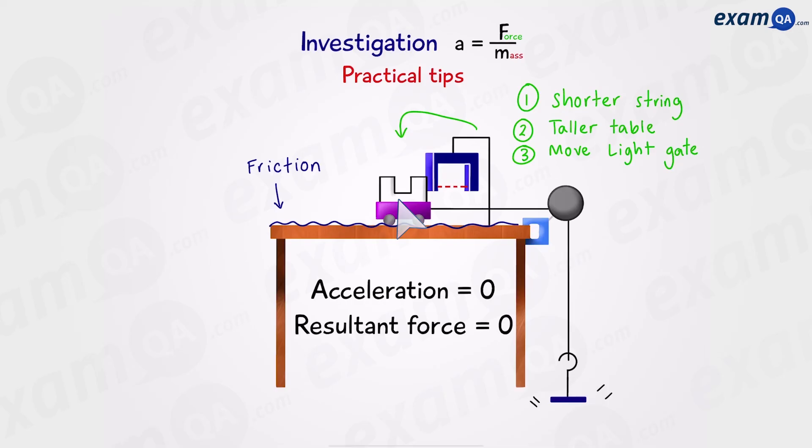Finally, any surface is going to have some sort of friction, and this can affect our results. To avoid friction, we could use an air track. If you've ever played air hockey, it's something similar to that. So this was investigating motion.